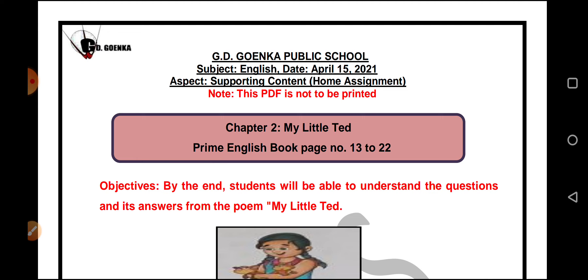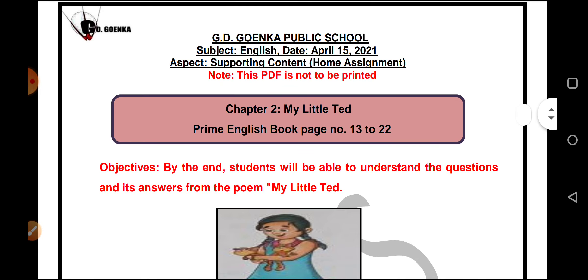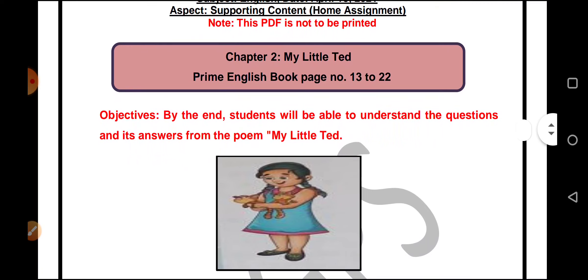The poem talks about how the poet enjoys time with her pet named Ted, how they like to spend time and play with each other. Ted is a playful dog. Now let's discuss questions from your English book.